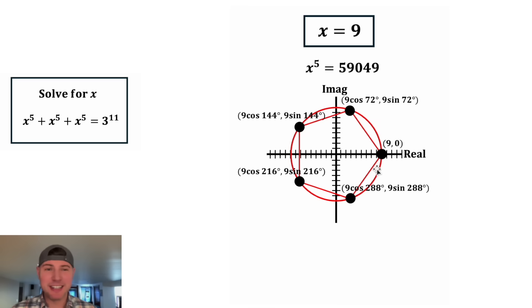It is possible to get exact values for these. That almost could be another video too. But we'll just do decimal approximations for this video. 9 cosine 72, if you plug it into a calculator, is about 2.78. And 9 sine 72 is about 8.56. As a high level check, that seems right.